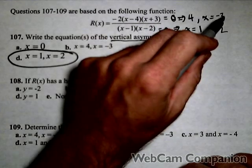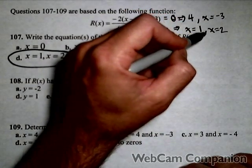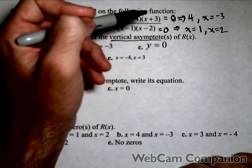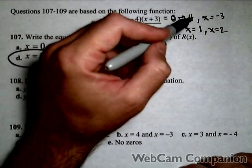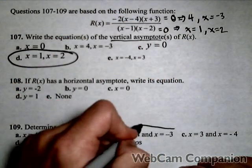The zeros are four and negative three only. Again, there's no negative three down here, no four down here, because if there's a zero and a vertical asymptote, you can't have both. That would create a hole in the graph. So our zeros are four and negative three.